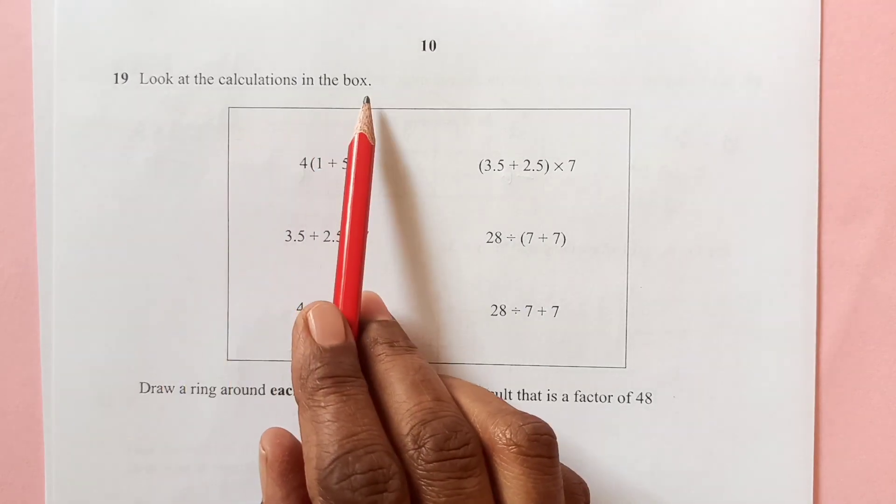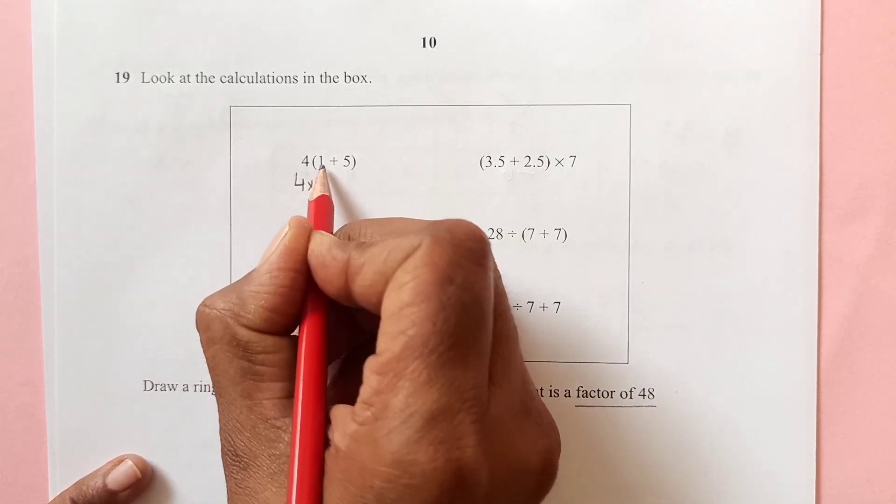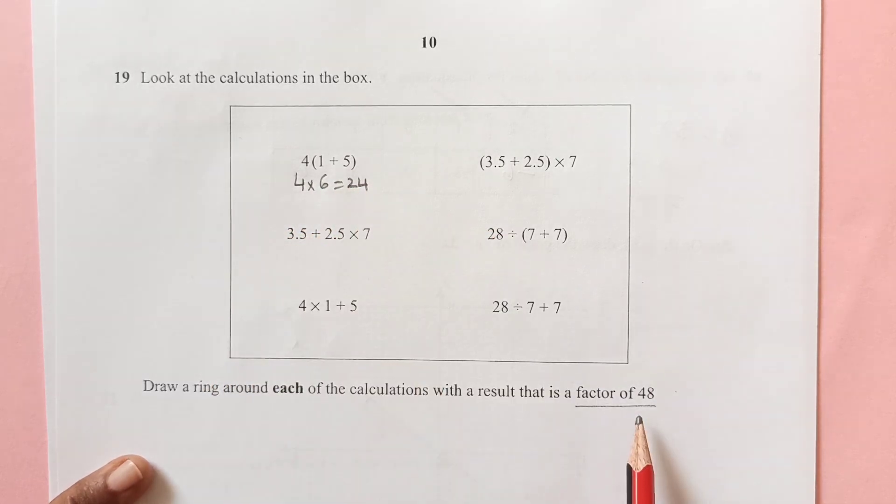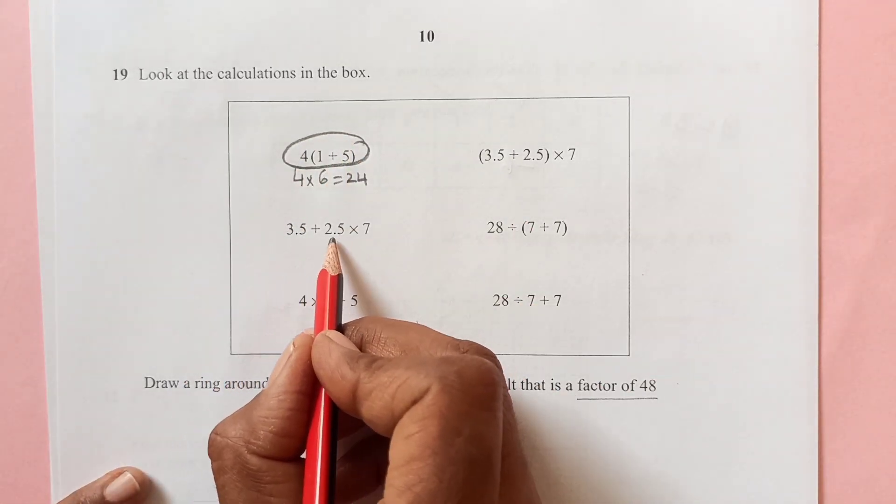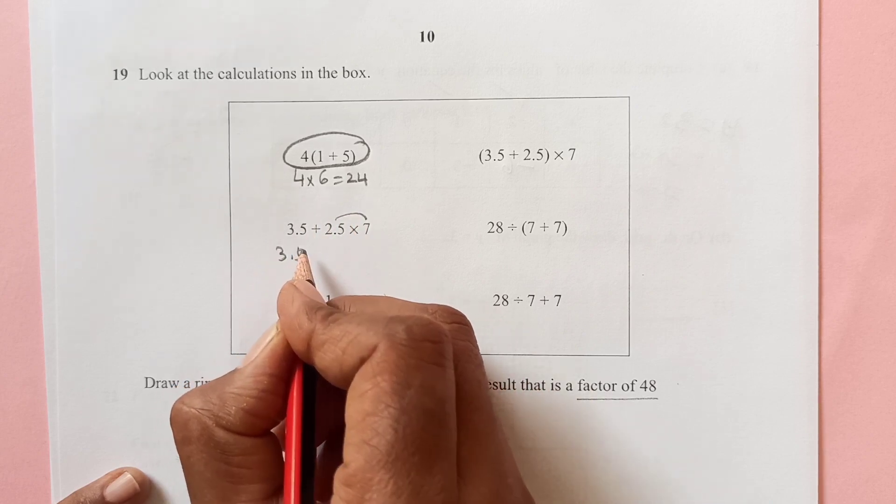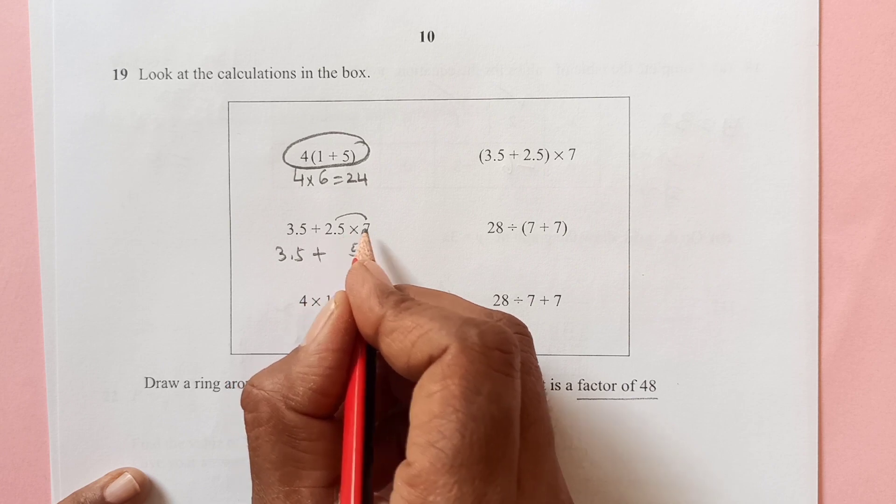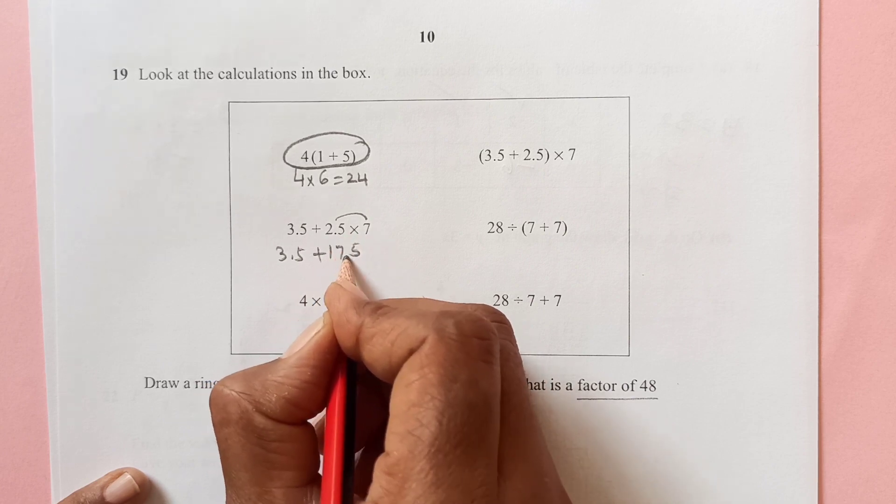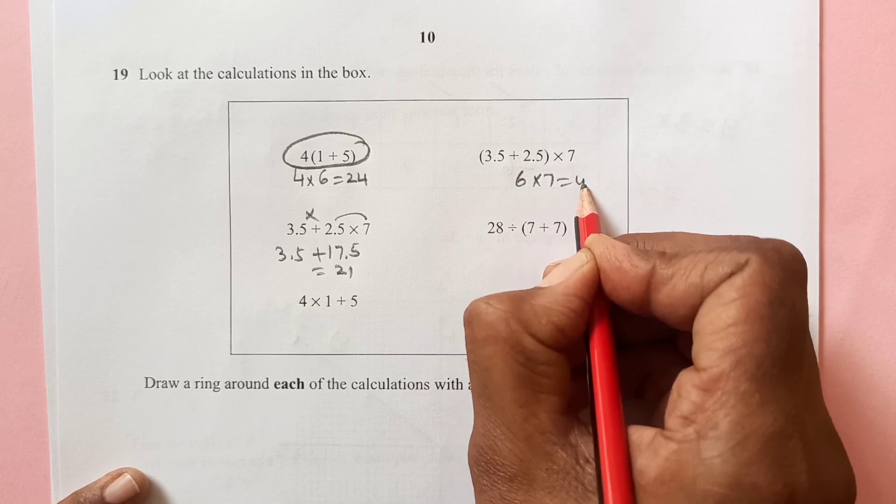Question 19. Look at the calculations in the box. Draw a ring around each of the calculation with result that is a factor of 48. So factor of 48 means that should divide 48. So we can do the calculation. This is 4 times 5 plus 6 is 24. So 24 times 2 is 48. So one answer we found, first one. The second one here, we need to do this one first, 3.5 plus this is going to be 7 times 5, 35. And this is 17.5 which is equal to 21. So this is not.